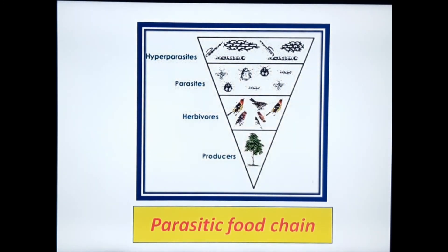This is a clear explanation of the food chain and its types, along with the different types of ecosystems — aquatic and terrestrial — with clear diagrams. Thank you for watching this video.